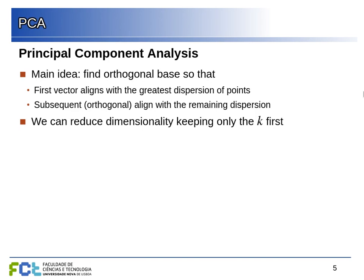The main idea of PCA is to find an orthogonal basis. Imagine your features are in n dimensions, and you want a set of mutually perpendicular vectors that span the most variation of your data. The first vector points where the data is spread the most, the second one points in a perpendicular direction capturing most of the remaining variation, then the third perpendicular to the first two, and so on. With PCA we find all these vectors and keep only a subset that represents most of the variance.